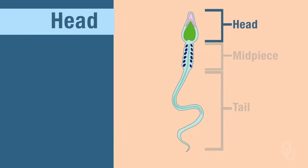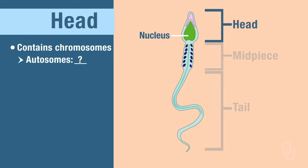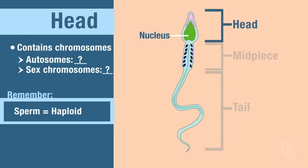The head contains a couple of important things, and number one, those are the chromosomes. How many autosomes are there in the head, and how many sex chromosomes? Remember, sperm are haploid, and because they're haploid, that means they're 1N. That means we're going to have 22 autosomes and one sex chromosome.